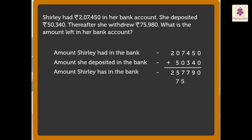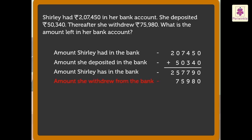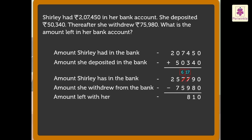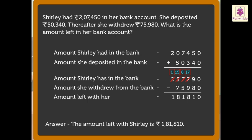We know that seventy-five thousand nine hundred eighty rupees is the amount she withdrew from the bank. Amount she withdrew — rupees seventy-five thousand nine hundred eighty. Now, to find the amount left, we subtract seventy-five thousand nine hundred eighty from two lakh fifty-seven thousand seven hundred ninety. Thus, the amount left with Shirley is one lakh eighty-one thousand eight hundred ten rupees.